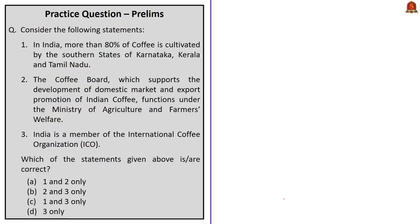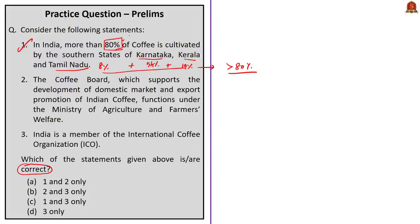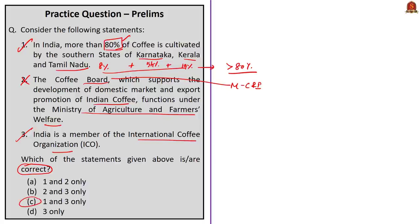Now let us look at the practice question — a three-statement question. Statement 1: In India, more than 80% of coffee is cultivated by the southern states of Karnataka, Kerala, and Tamil Nadu. Karnataka cultivates around 54%, Kerala 19%, and Tamil Nadu about 8% — totaling more than 80%, so statement 1 is correct. Statement 2: The Coffee Board functions under the Ministry of Agriculture and Farmers Welfare — this is incorrect, as it functions under the Ministry of Commerce and Industry. Statement 3: India is a member of the International Coffee Organization — correct. The correct answer is option C: 1 and 3 only.